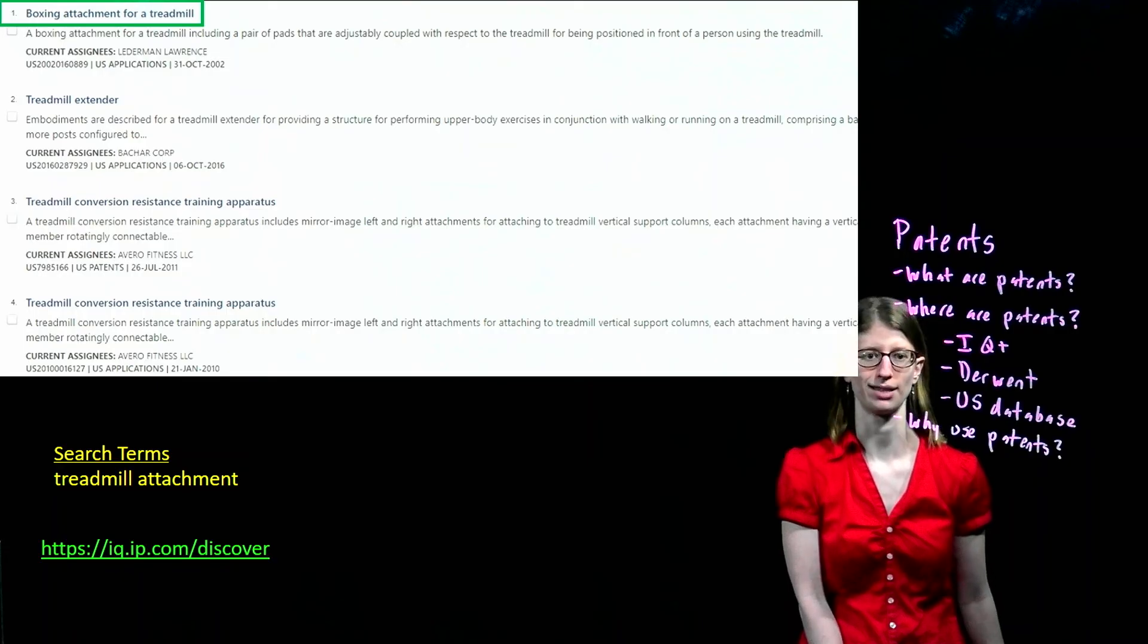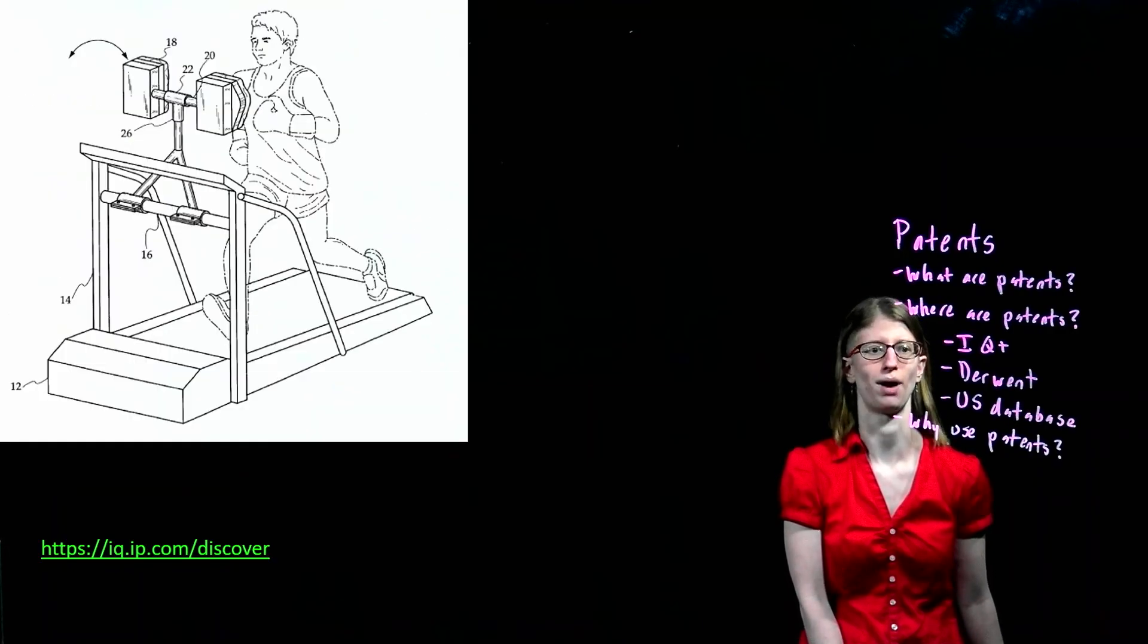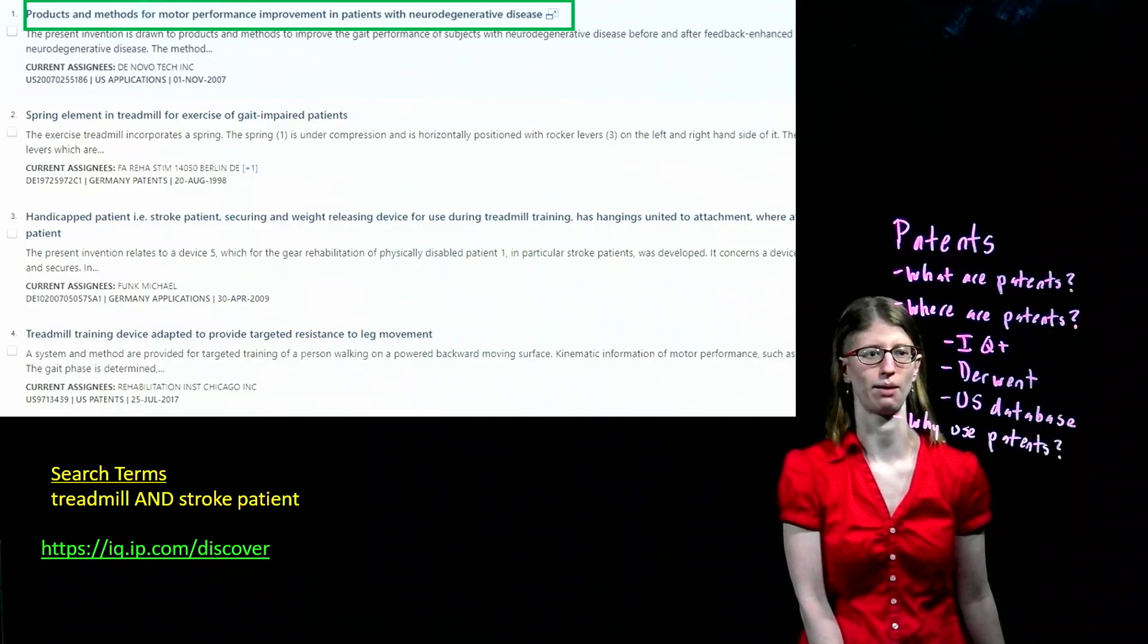When I click on the boxing attachment patent, I see a picture of a boxing attachment attached to a treadmill. A new search for treadmill and stroke patient brings up these patents. The results confirm that treadmills can be used with stroke patient rehabilitation devices, in this case to make their strides longer.